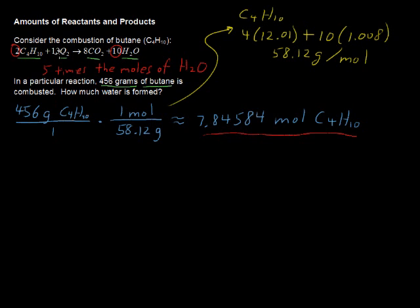For every two of butane we get 10 of water. So a lot of oxygen is coming into play there, of course, because you can't get more than what you begin with. But remember that we're adding the oxygen as well to the butane. So that's why we get so much more water.